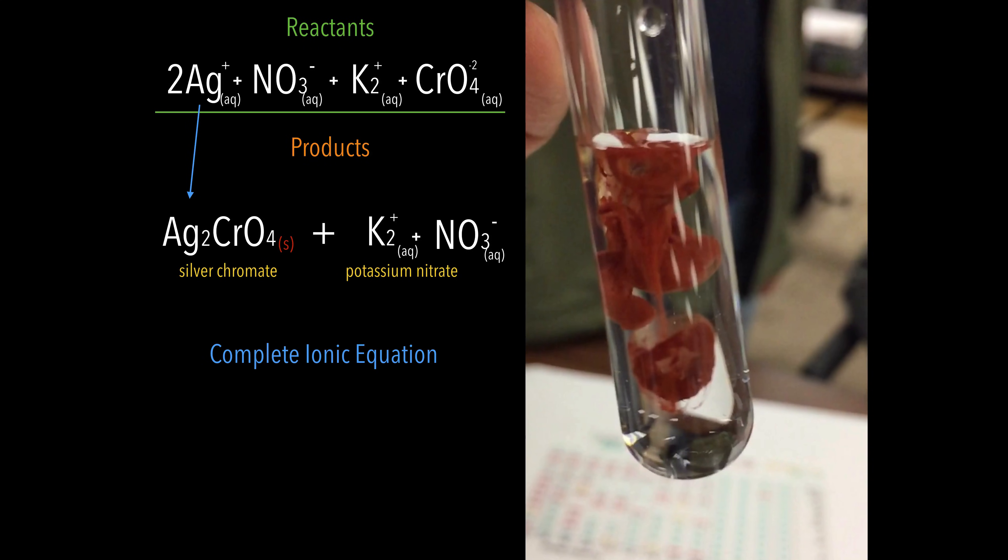If I look at the silver, it's aqueous on the reactant side and then it goes to a solid on the product side. So that stays. There was a reaction; we had a change in state. You'll notice with the nitrate aqueous, on the product side it remained aqueous. So we don't actually want those. We eliminate those because they were not a part of the reaction.